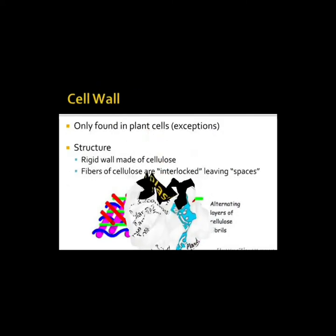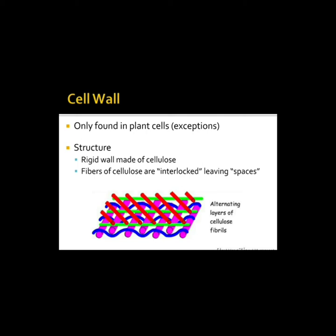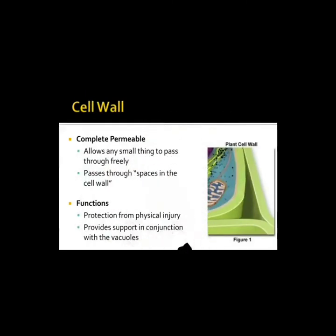Next topic is the cell wall, found only in plants. Structure: it is a rigid wall made of cellulose. Fibers of cellulose are interlocked leaving spaces — it contains several spaces forming an interlocked structure, as you can see in the picture. The cell wall is completely permeable, allowing any small thing to pass through freely via the spaces in the cell wall.